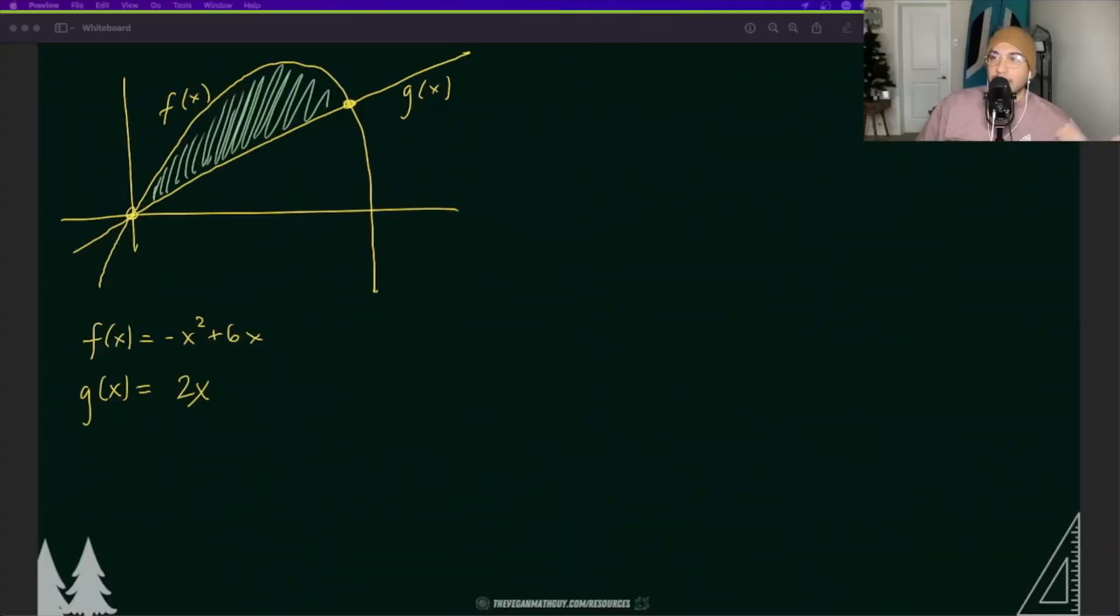Because we're going to find the area in terms of x we are going to have to find the distance between the top function f(x) minus the bottom function g(x) and now we need to find those bounds. So we need to check when these functions are equal to each other so let's go ahead and do that now.